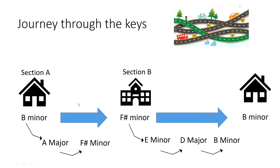Imagine you're at home — B minor — and you need to get to school, so you walk to the bus stop, which is A major. The bus for your school pulls up — that's F sharp minor — and takes you to school. When school's finished, you get a lift from a friend's parent to the bus stop — that's E minor. You arrive at the bus stop, which is D major, and then the bus arrives — B minor — and takes you back home.